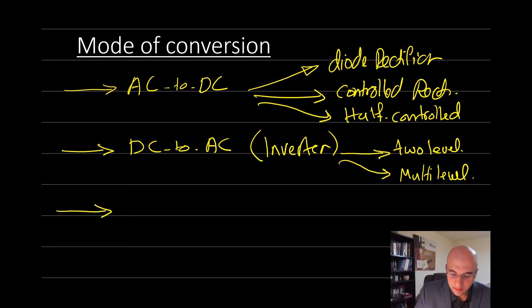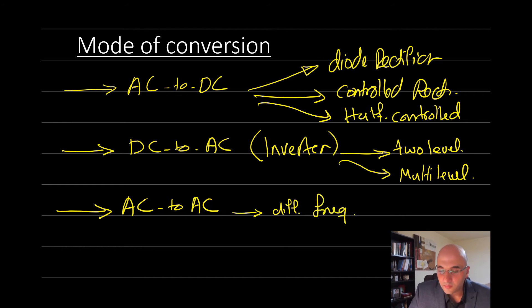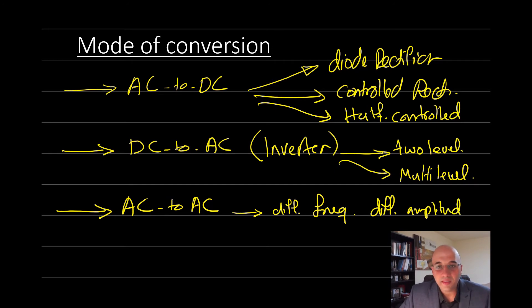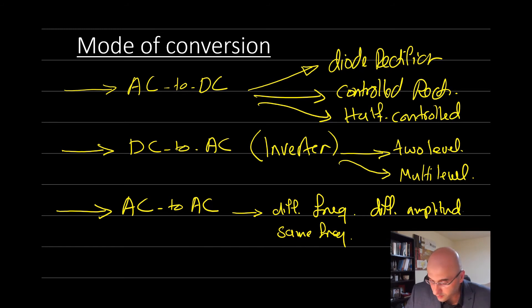The third category is AC to AC converters. These converters can operate at a different frequency and different amplitude, or at the same frequency but a different amplitude. So the input and output of this converter can have different frequencies, similar frequencies with different amplitudes, or both different frequency and different amplitude.